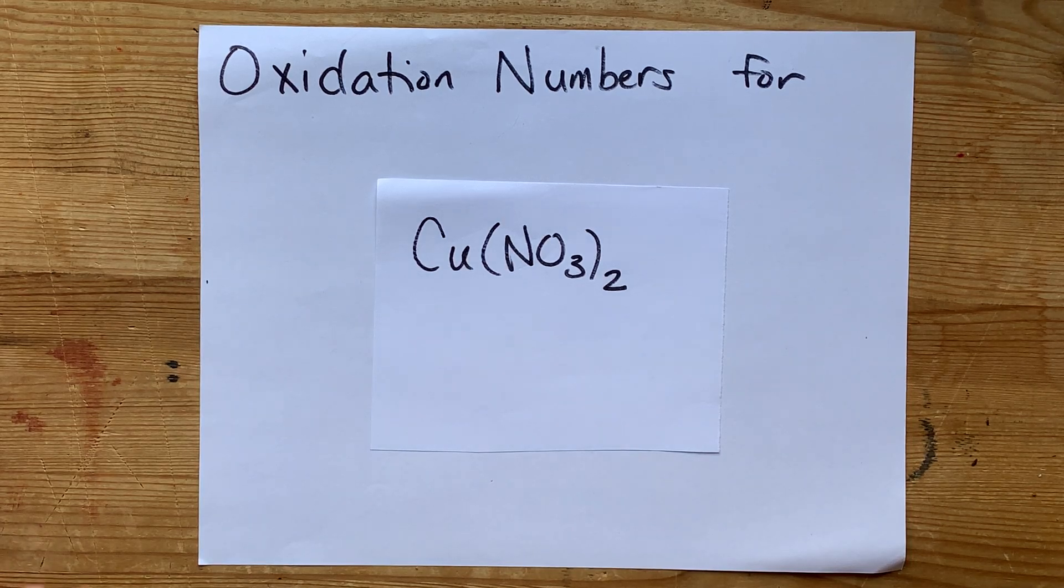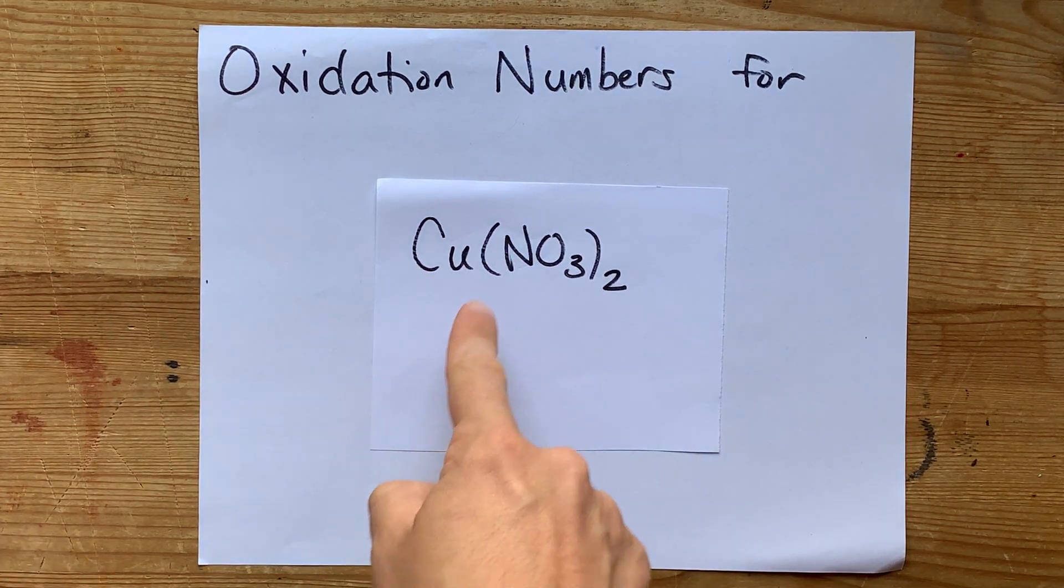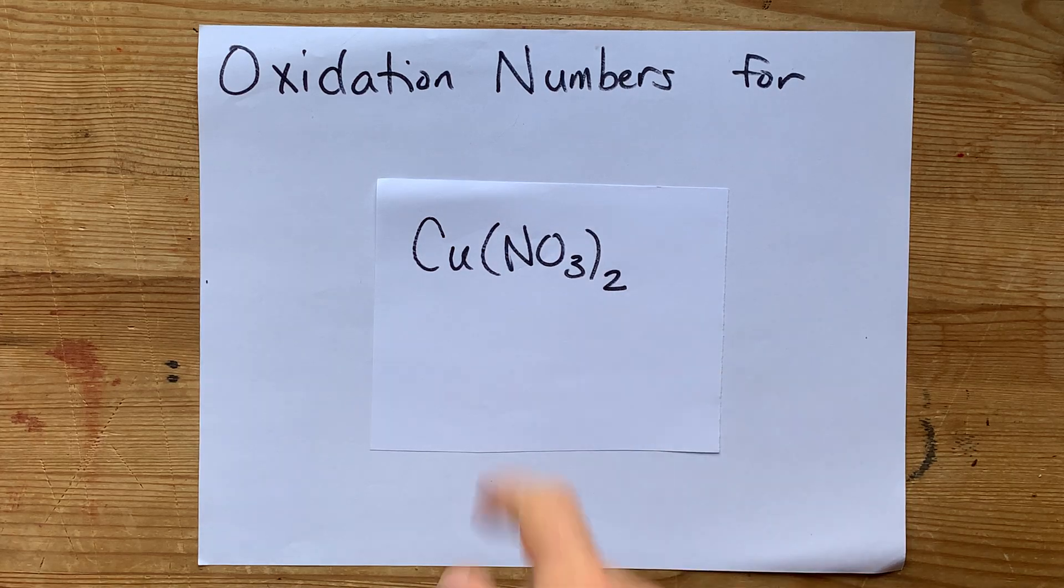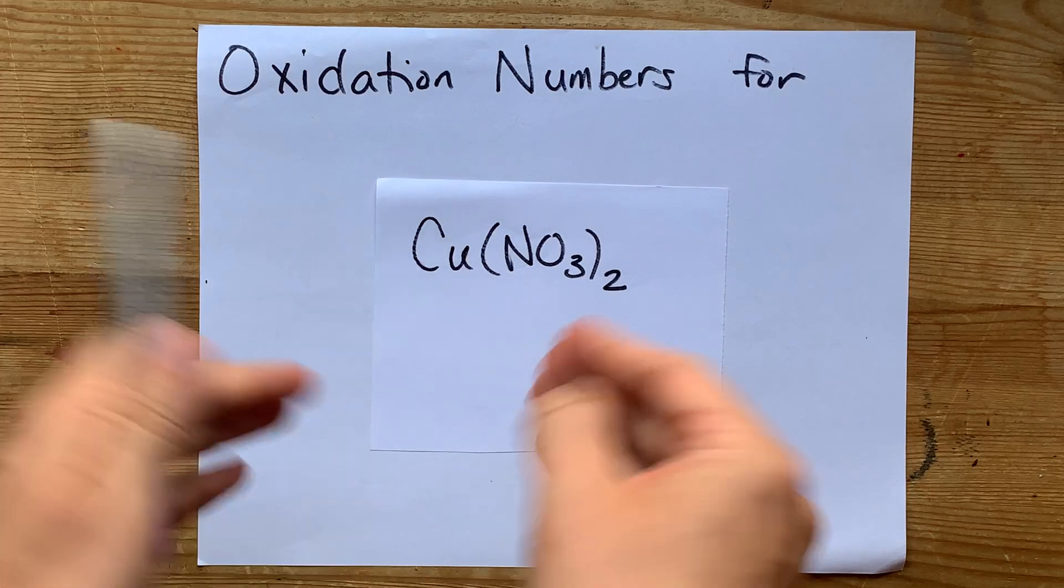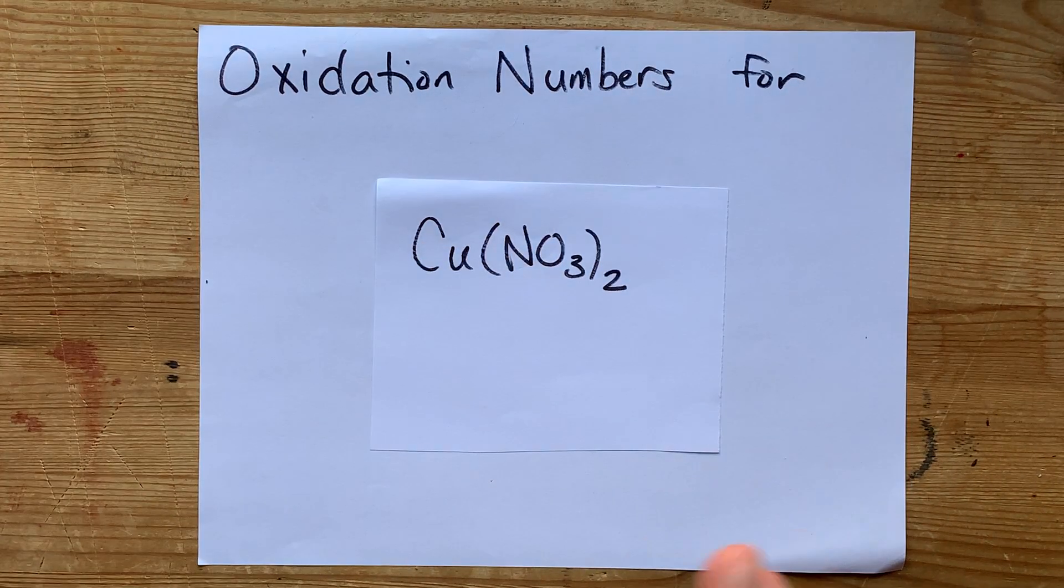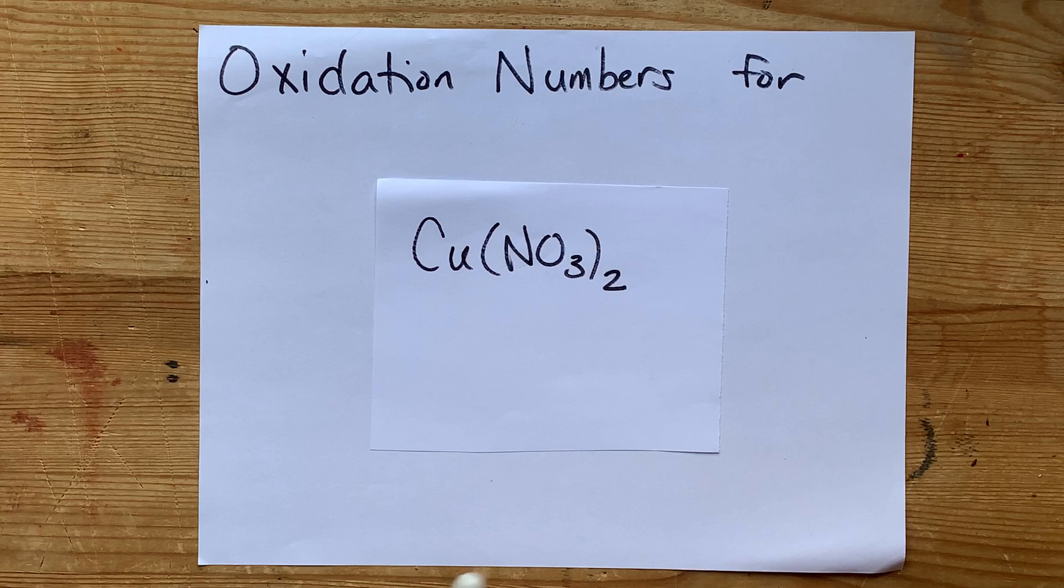We're going to do the oxidation numbers for the atoms in Cu(NO3)2, or copper 2 nitrate. Now, this is an ionic compound. I'm going to break it up into its constituent ions to help figure this out.